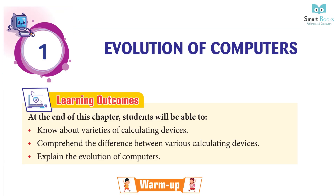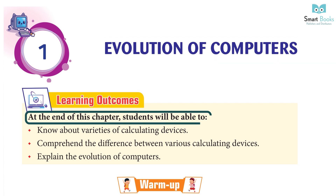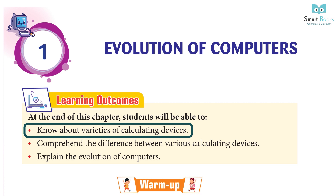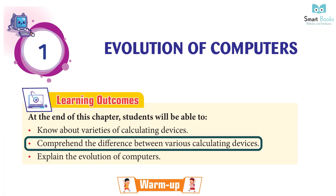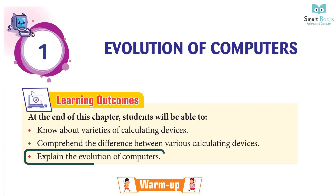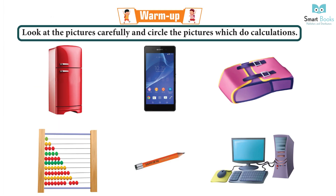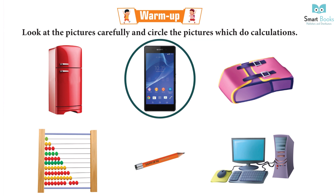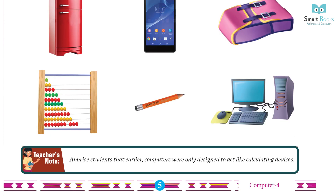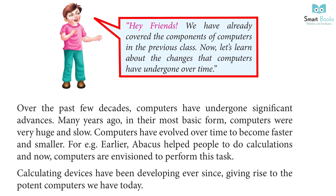Chapter 1: Evolution of Computers. Learning outcomes — at the end of this chapter, students will be able to know about varieties of calculating devices, comprehend the difference between various calculating devices, and explain the evolution of computers. Warm-up: look at the pictures carefully and circle the pictures with two calculations — circle the mobile phone and the desktop computer. Teacher's note: apprise students that earlier computers were only designed to act like calculating devices.